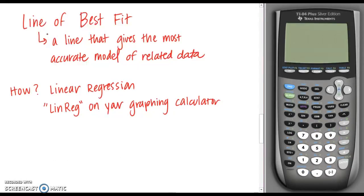You may be thinking that process wasn't very accurate — that's why there's something called line of best fit. Line of best fit is a line that gives the most accurate model of related data. The way we get this line of best fit is by using a function on our graphing calculator called linear regression, shown on the calculator as LINREG for abbreviation.